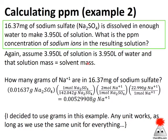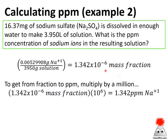We can make the same assumptions with the water. Now, how many grams of sodium ions are in that many milligrams of sodium sulfate? I'll go through moles. I take grams of sodium sulfate, convert to moles of sodium sulfate; for every one mole of sodium sulfate, I have two moles of sodium ions; and sodium is 22.990 grams per mole from the periodic table. Divide by the grams of solution to get the mass fraction, and multiply by a million to get parts per million. The result is 1.342 parts per million sodium ions in this solution.